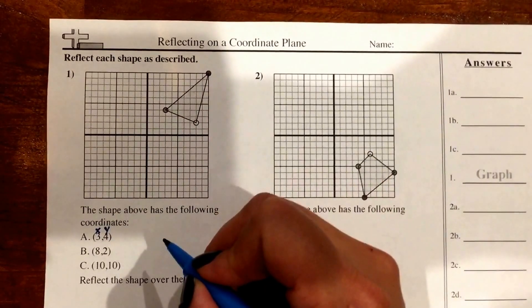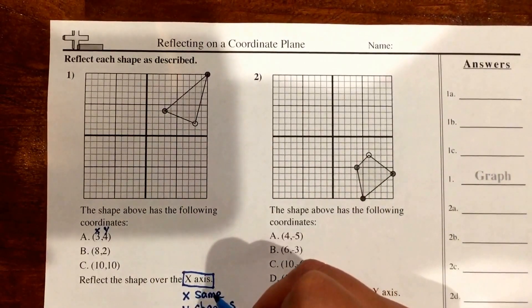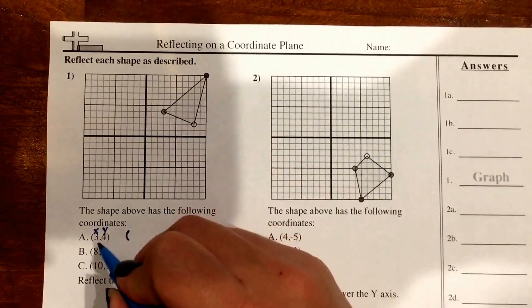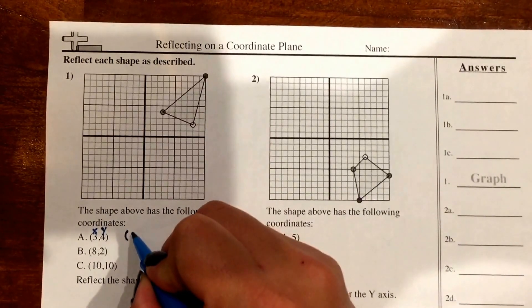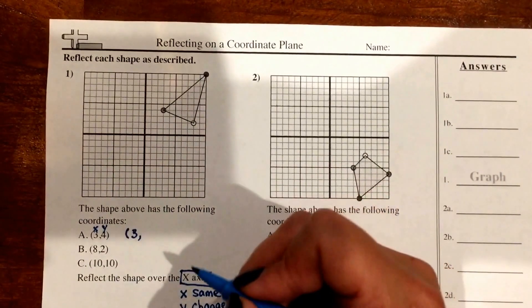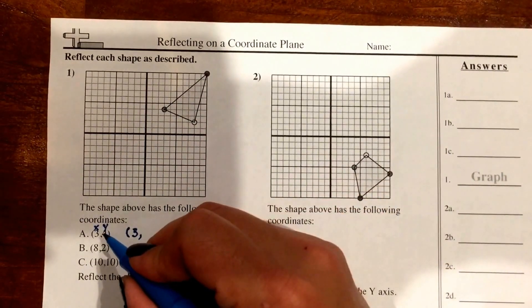So since I'm reflecting it over the x-axis, I know that my x-coordinate is going to stay the same. So let's write that next to it. If my x-coordinate is 3, it's going to stay as a positive 3.